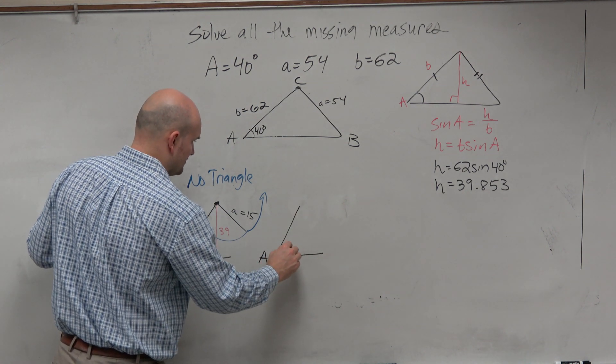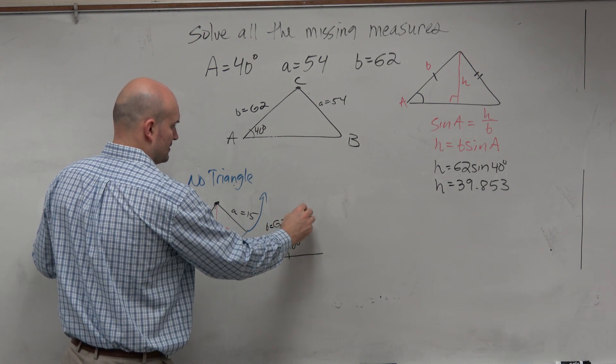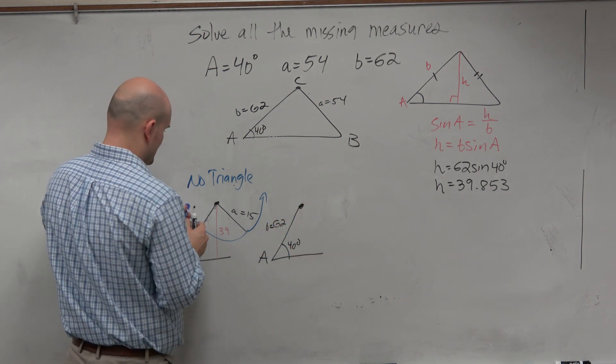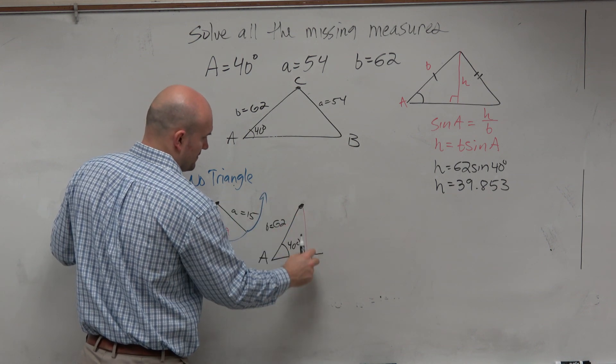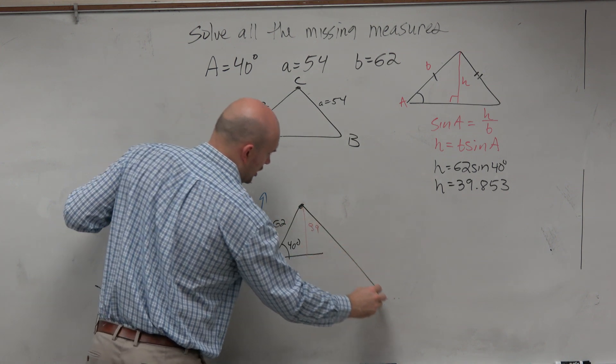Let's move to the next situation. Again, here's A, 40 degrees. Here's 62, which is B. And then let's pretend, so we have A is 39. Let's pretend instead of this being 54, let's pretend this is 100.